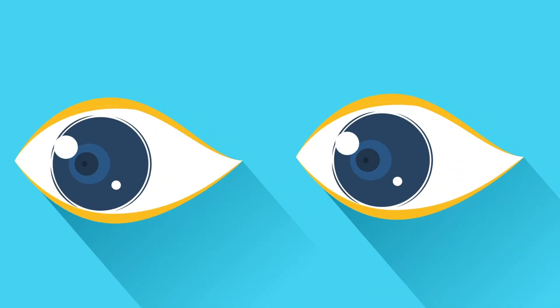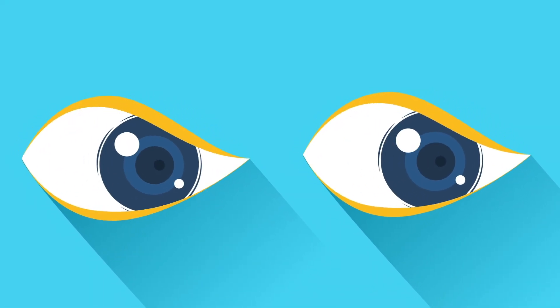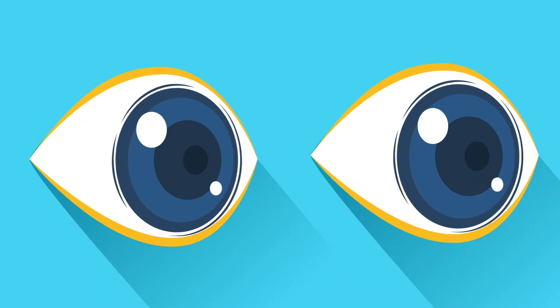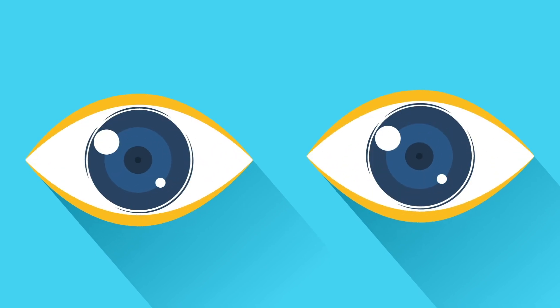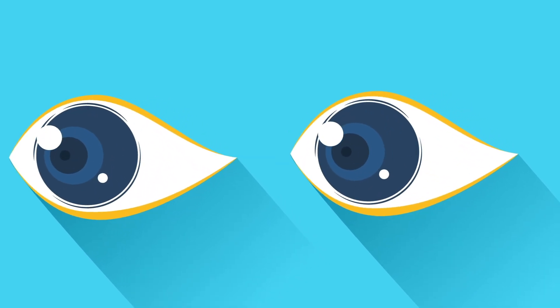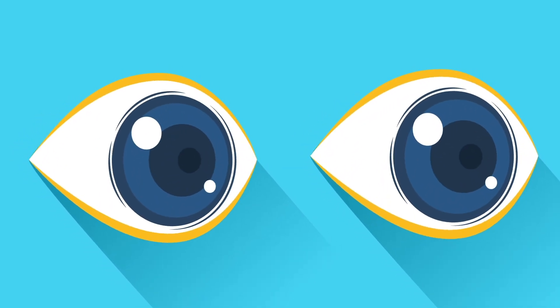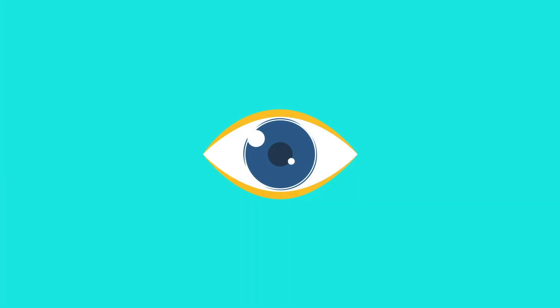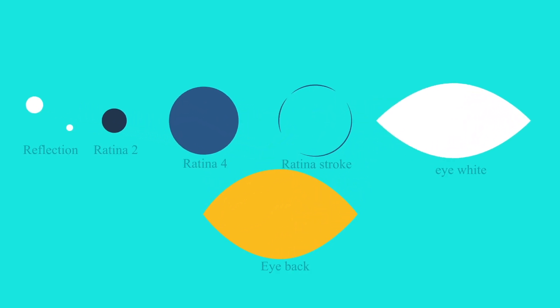Hey there, welcome to Proud Animator. In this video we are going to learn how to animate an eye in After Effects. So let's start. This is the illustration we are going to use in this lesson, and this is how I have separated the layers in Adobe Illustrator. Now let's jump on to After Effects.